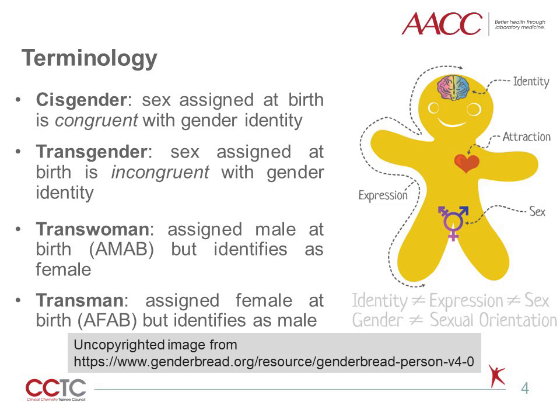A trans woman is an individual assigned male at birth, or AMAB, but who identifies as a woman. Conversely, a trans man is someone assigned female at birth, or AFAB, but who identifies as a man.